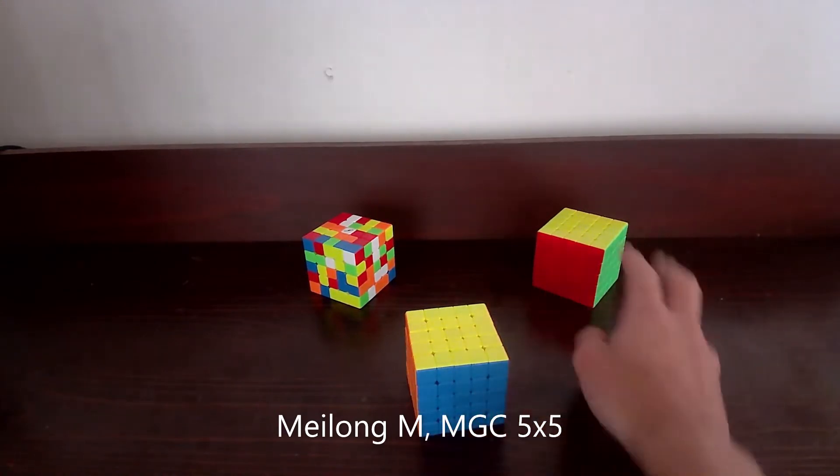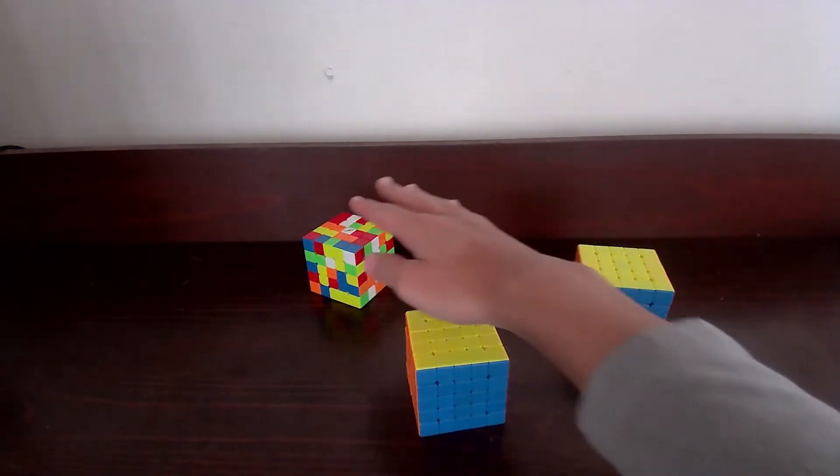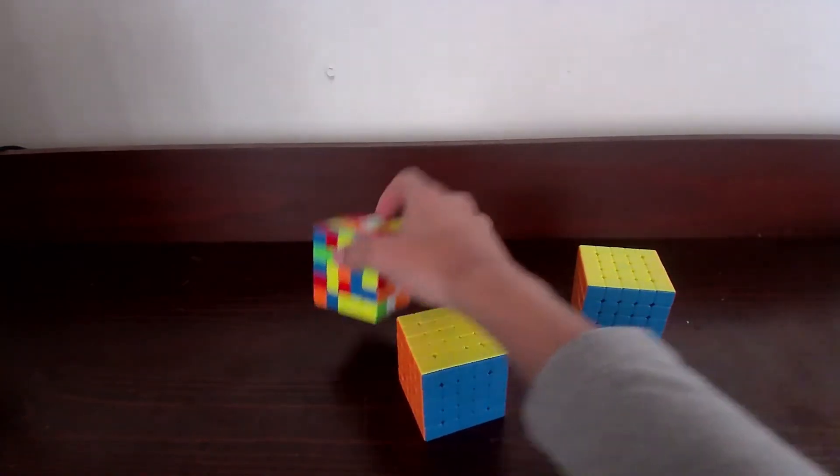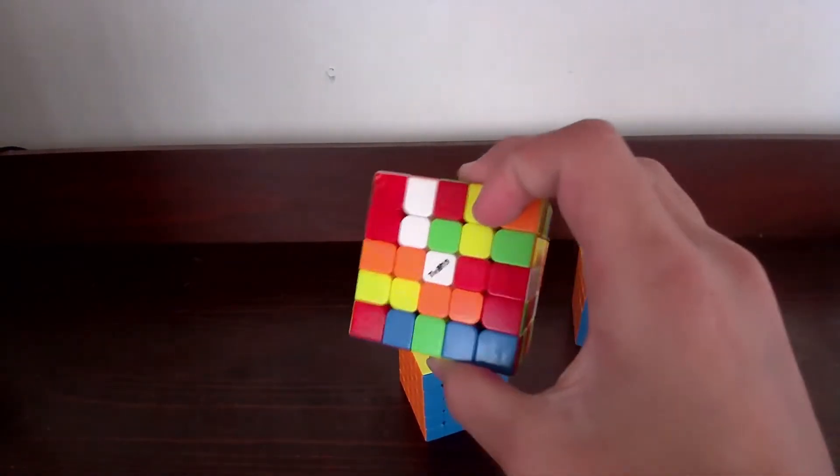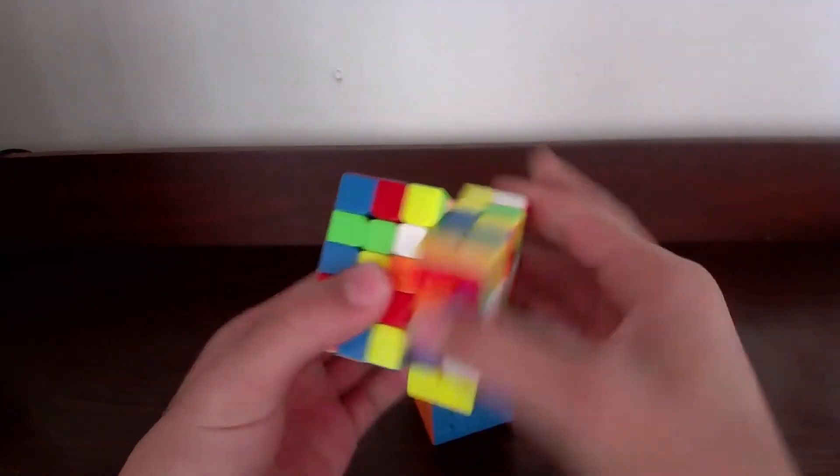If you want a really good 5x5, get the YJMGC, which is this one, it has no logo. This one is unfortunately discontinued, it is the Valk5. If you do happen to have this lying around, this is a really good 5x5 and I love it.